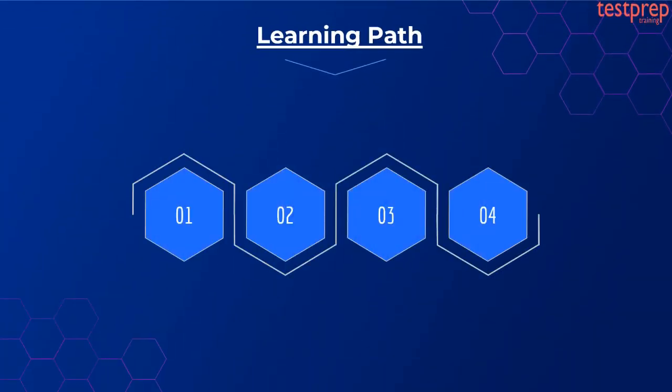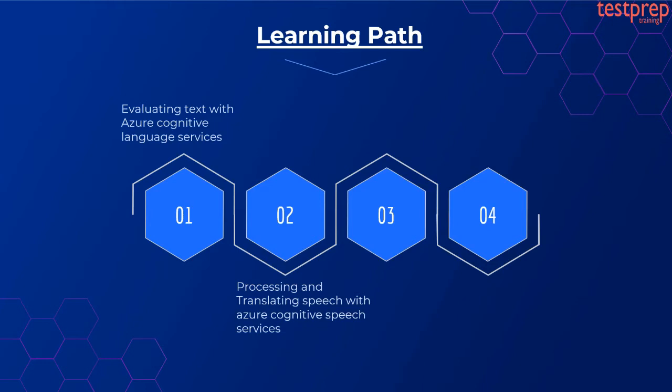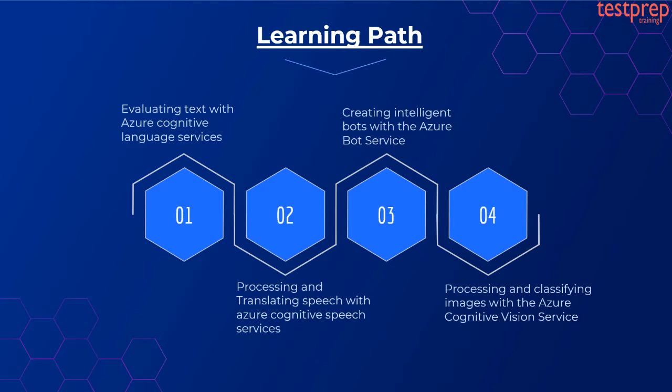Microsoft provides candidates access to the learning path that helps them to understand the concepts in a step-by-step format. These learning paths include modules that help candidates to enhance their skills and knowledge in: first, evaluating text with Azure Cognitive Language Services; second, processing and translating speech with Azure Cognitive Speech Services; third, creating intelligent bots with the Azure Bot Service; fourth, processing and classifying images with the Azure Cognitive Vision Service.